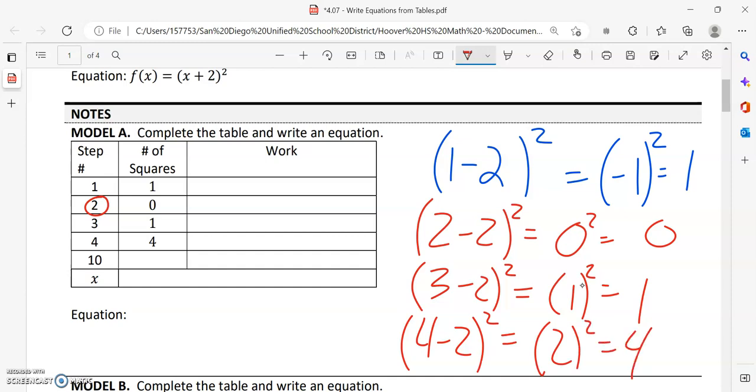So we found our pattern, one, two, three, four, that is our x. So we're going to do x minus two squared.